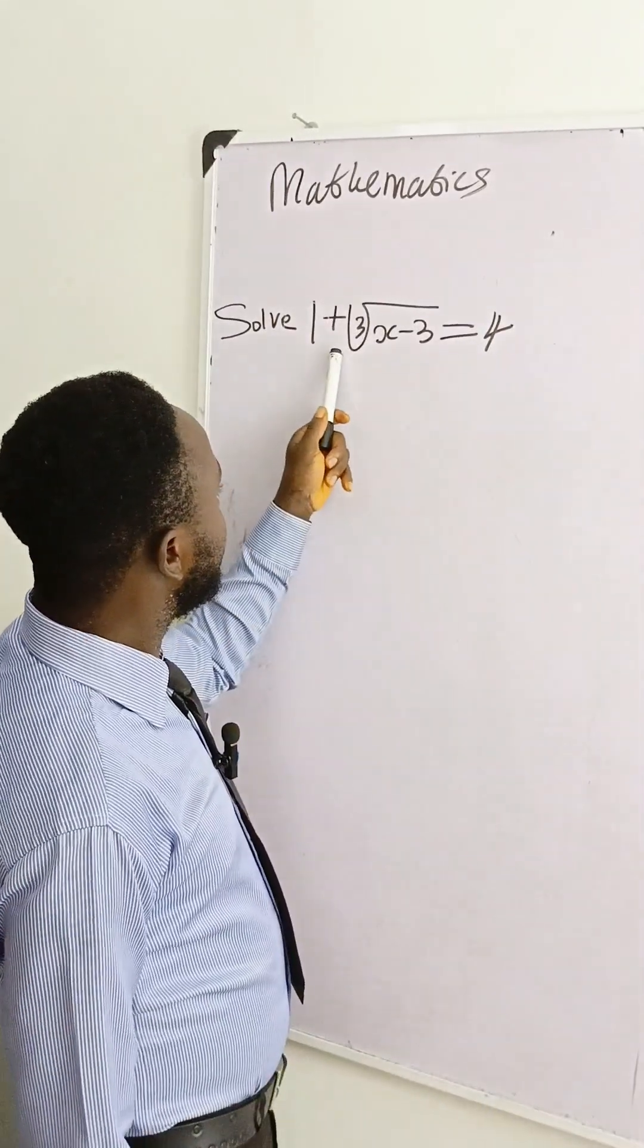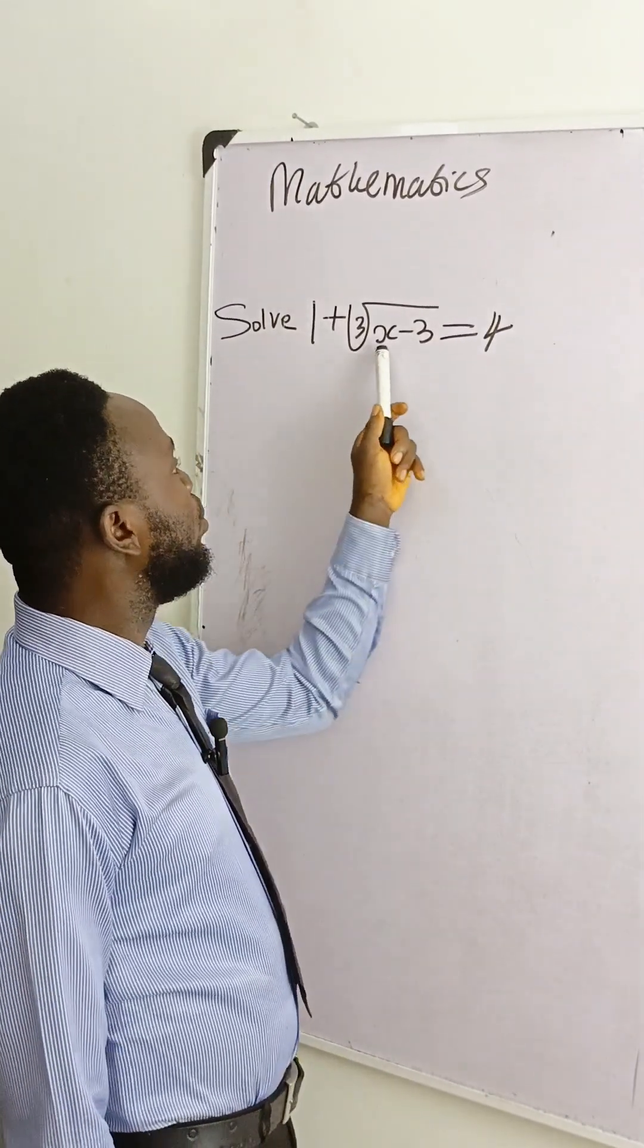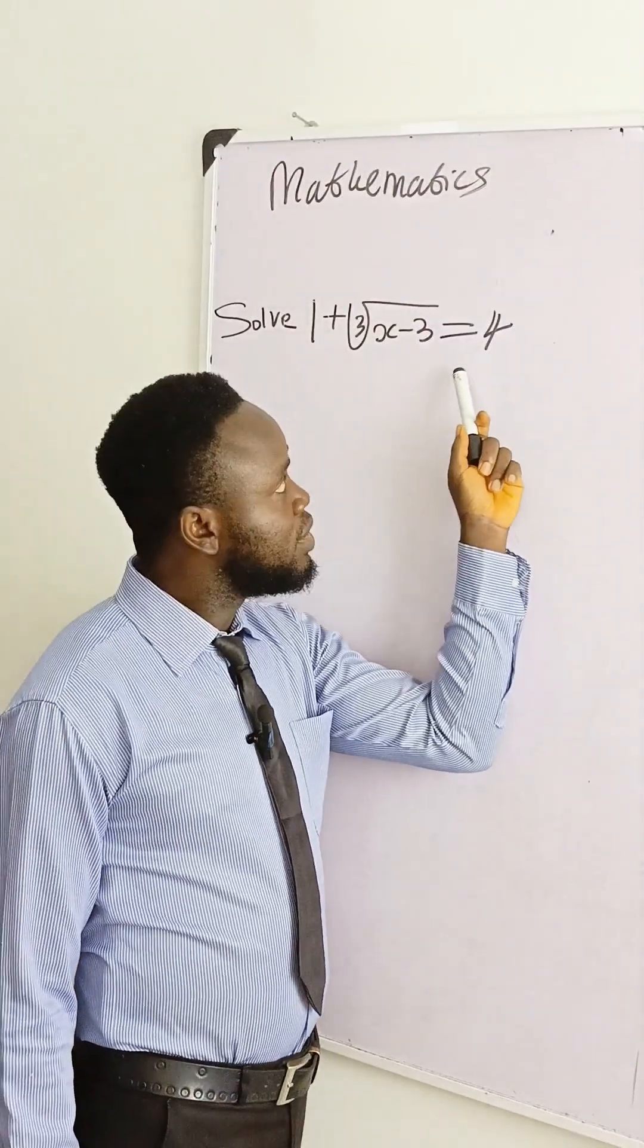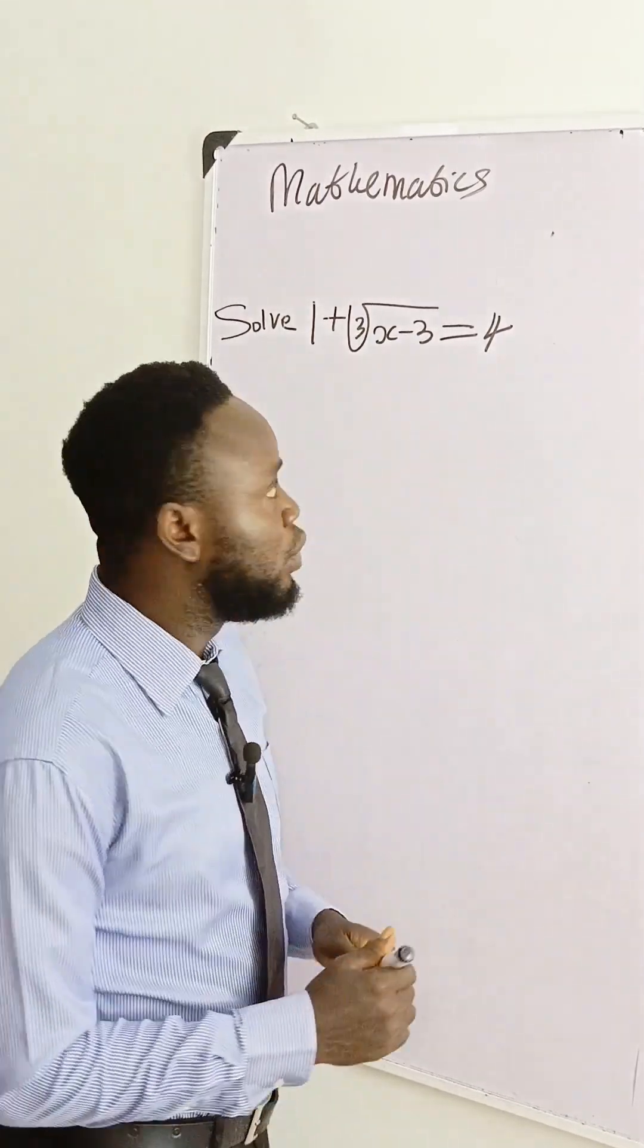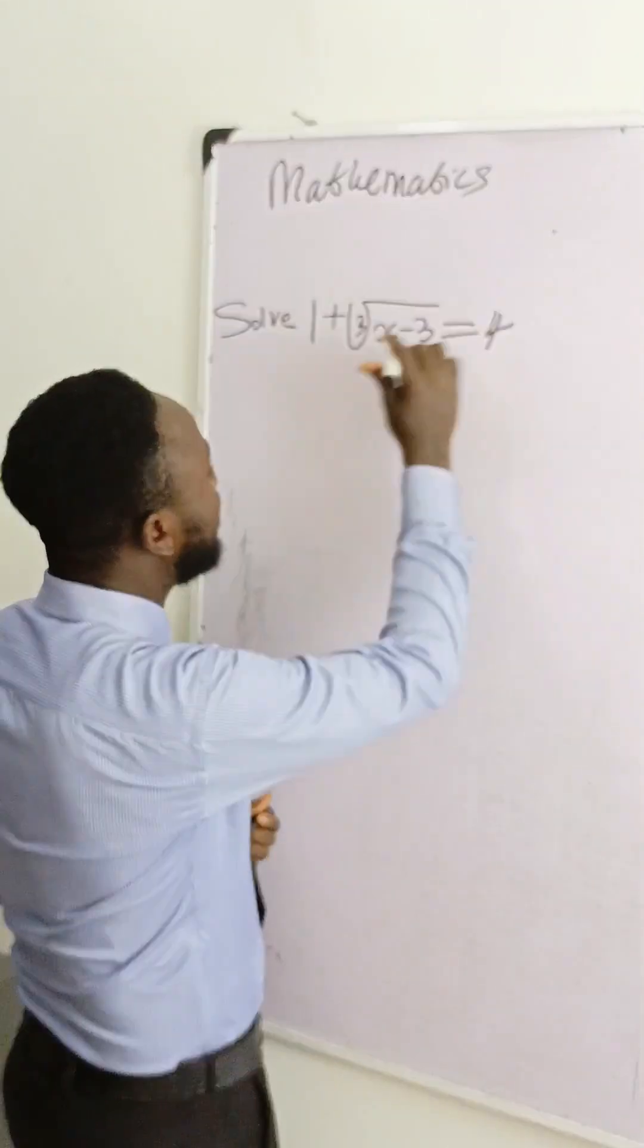Let's solve this and find the value of x. That is 1 plus cube root of x minus 3 is equal to 4. The first thing we will do is to take this one here.